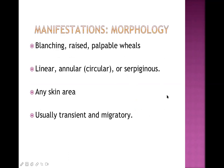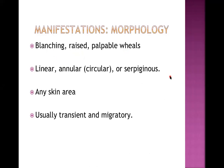Morphologically, urticaria lesions are called wheals - these are dermal edema lesions, elevated from the skin, discrete, palpable, blanching, and raised from the surface. Blanching means when pressed they fade, but return when pressure is released. The shape may be linear, annular, or circular. Any skin area may be involved and the lesions are usually transient and migratory.